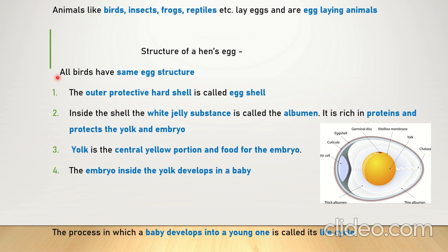Now let's look at one more important thing — the structure of a hen's egg. All birds have the same egg structure. The outer protective hard shell is called the eggshell. It covers and protects what is inside, just like a cell wall protects a cell. Inside the egg, the white jelly-like substance is called albumin. It is rich in proteins and protects the yolk and embryo.